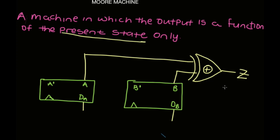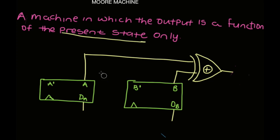The output Z is a function of the present state only. This is really different from a Mealy machine, because in a Mealy machine the output is a function of both the present state and the input. So in the Mealy machine, the output is going to be a function of the present state and the input.